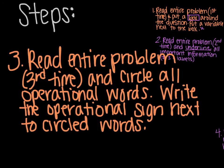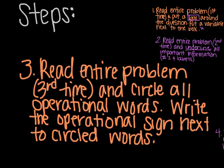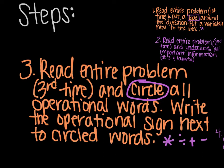Step number three. You're going to read the entire problem again for a third time and circle all the operational words. Then you're going to write that operational sign next to the circled words. So for example, if you're multiplying, dividing, adding, or subtracting, you will include those symbols next to the words.